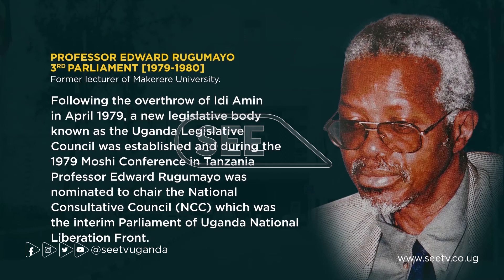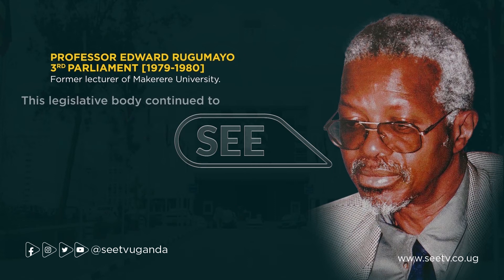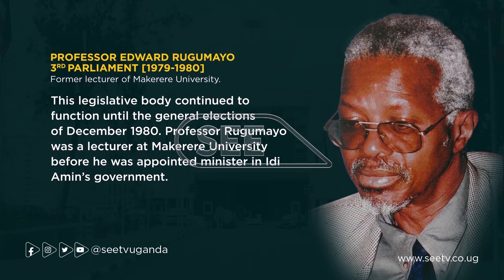Professor Edward Rugumayo led the third parliament from 1979 to 1980. Following the overthrow of Idi Amin in April 1979, a new legislative body known as the Uganda Legislative Council was established. During the 1979 MOSH conference in Tanzania, Professor Edward Rugumayo was nominated to chair the National Consultative Council, which was the interim parliament of the Uganda National Liberation Front. The legislative body continued to function until the general elections of December 1980. Professor Rugumayo had been a lecturer at Makerere University before being appointed minister in Idi Amin's government.